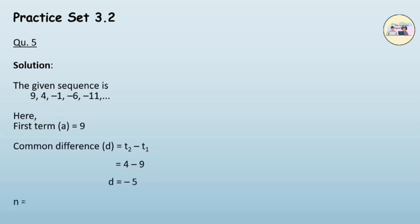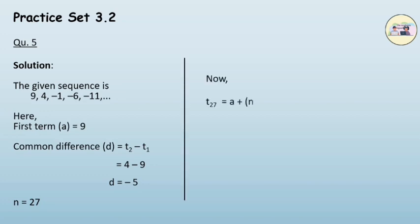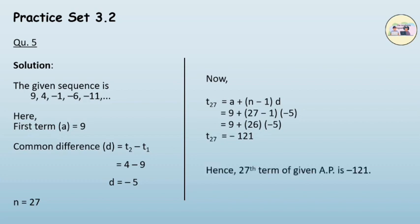n is equal to 27. Now, our formula t_27 is equal to a plus n minus 1 into d. Solving, we get t_27 as minus 121. Hence, the 27th term of the given AP is minus 121.